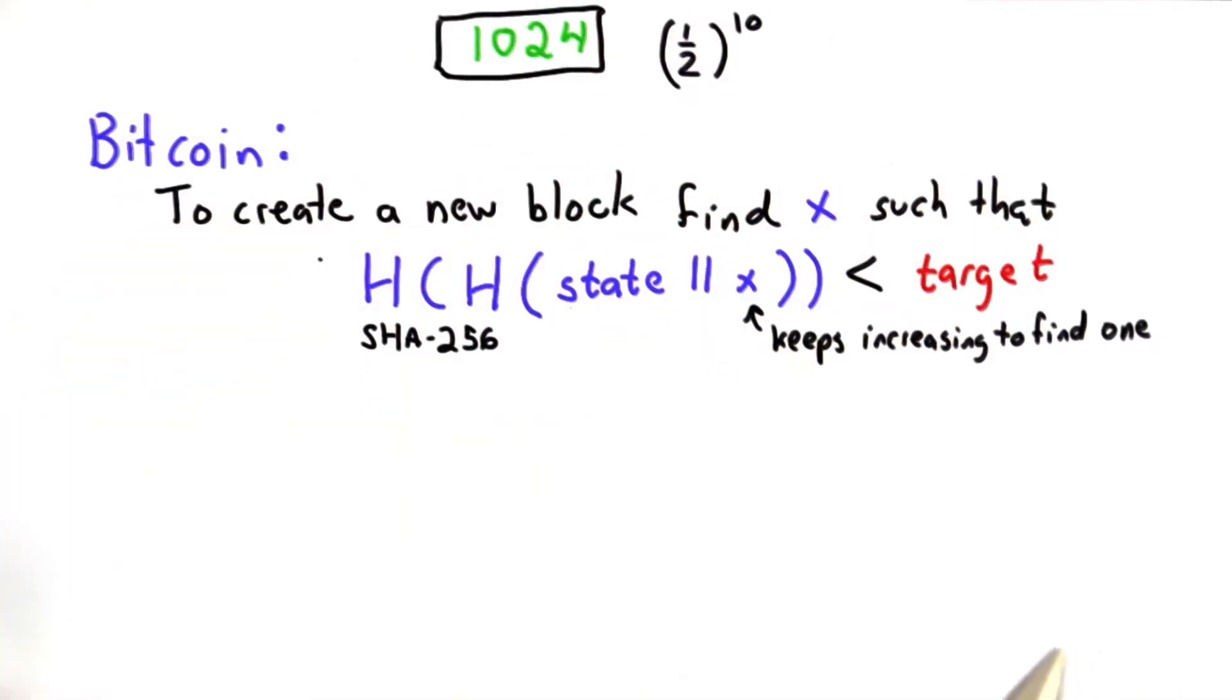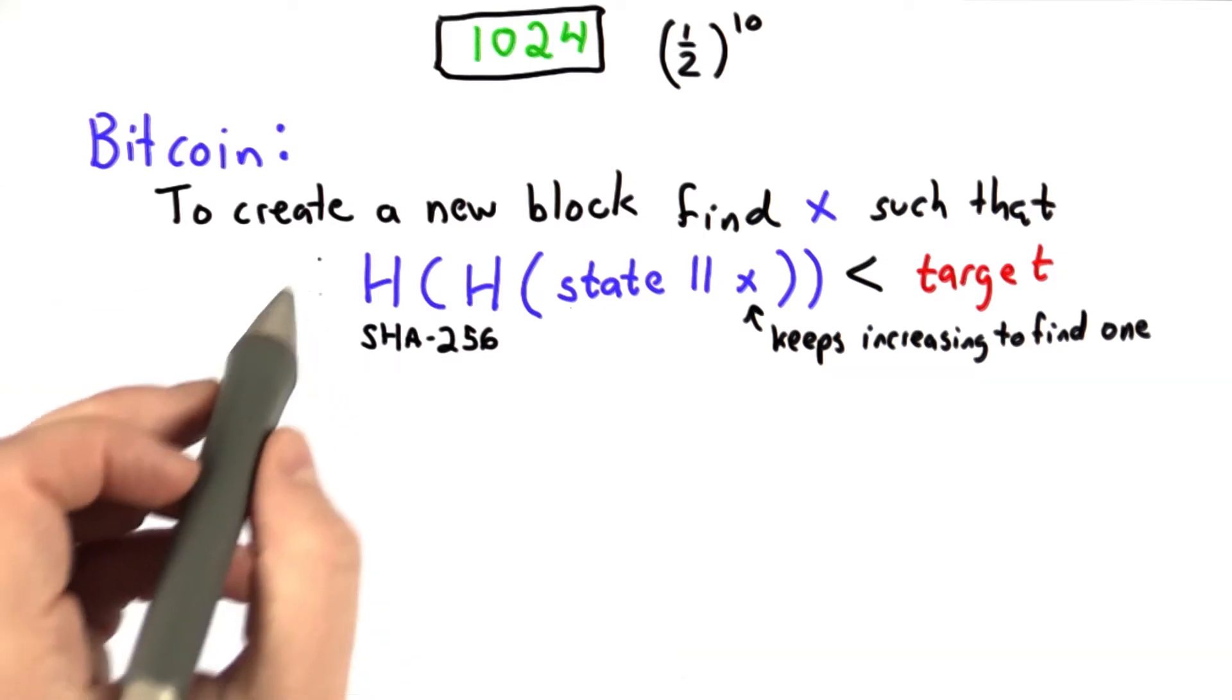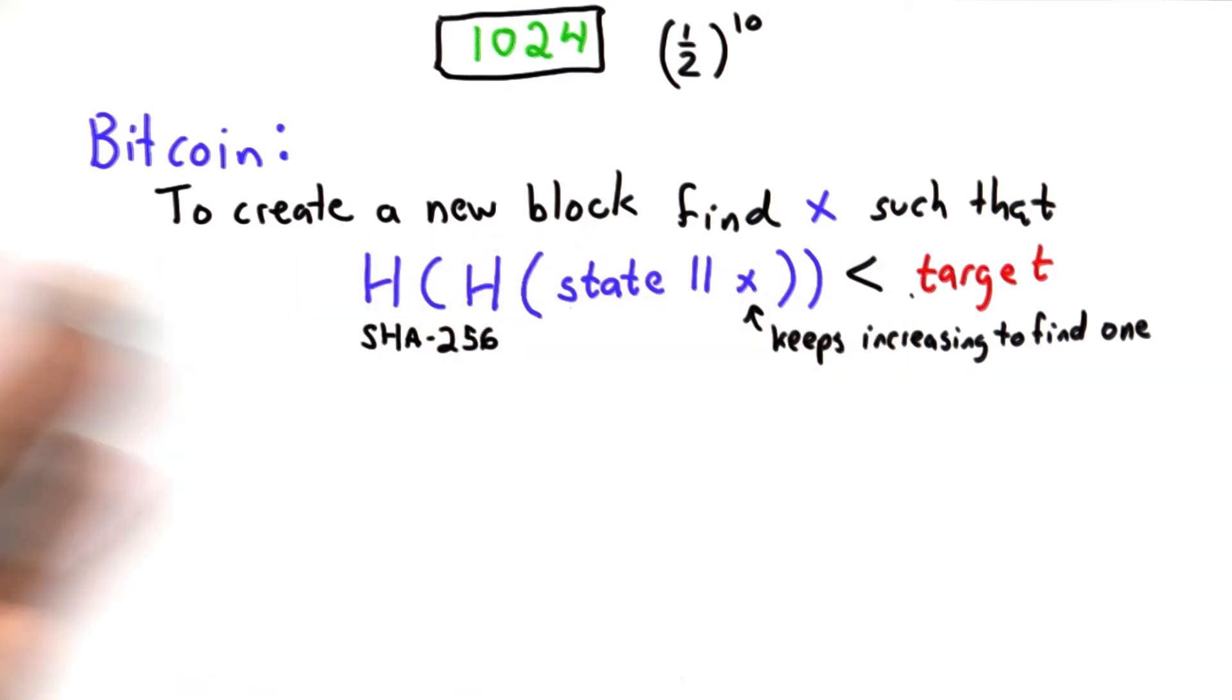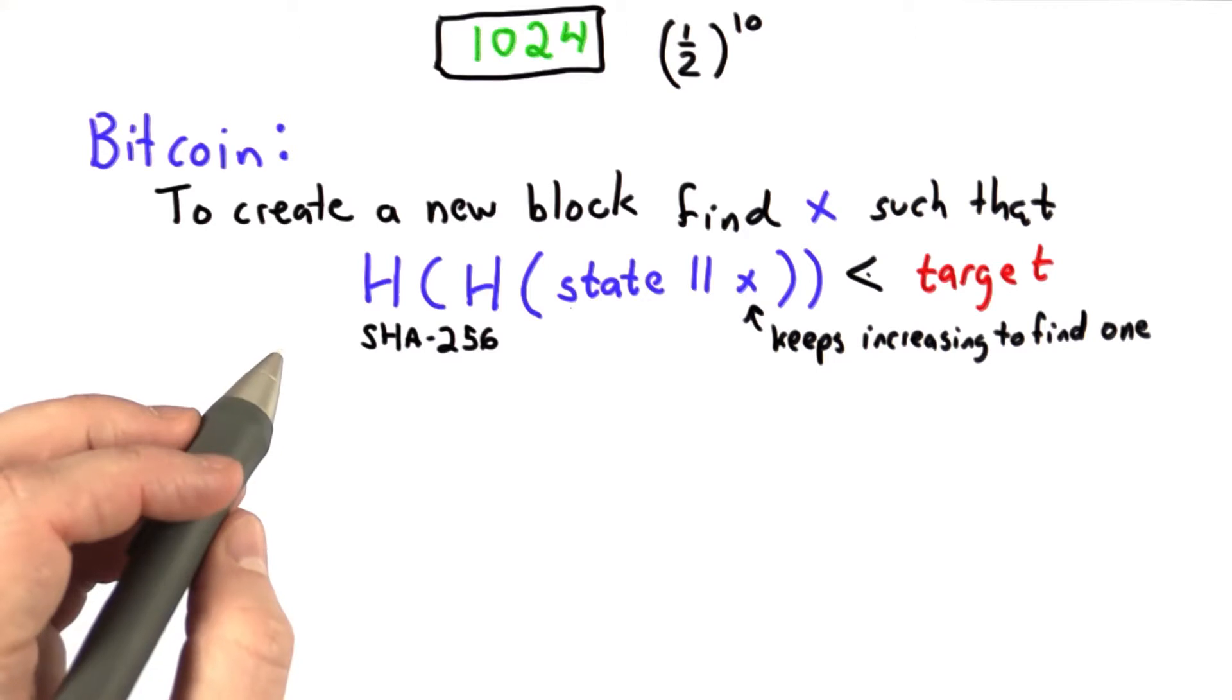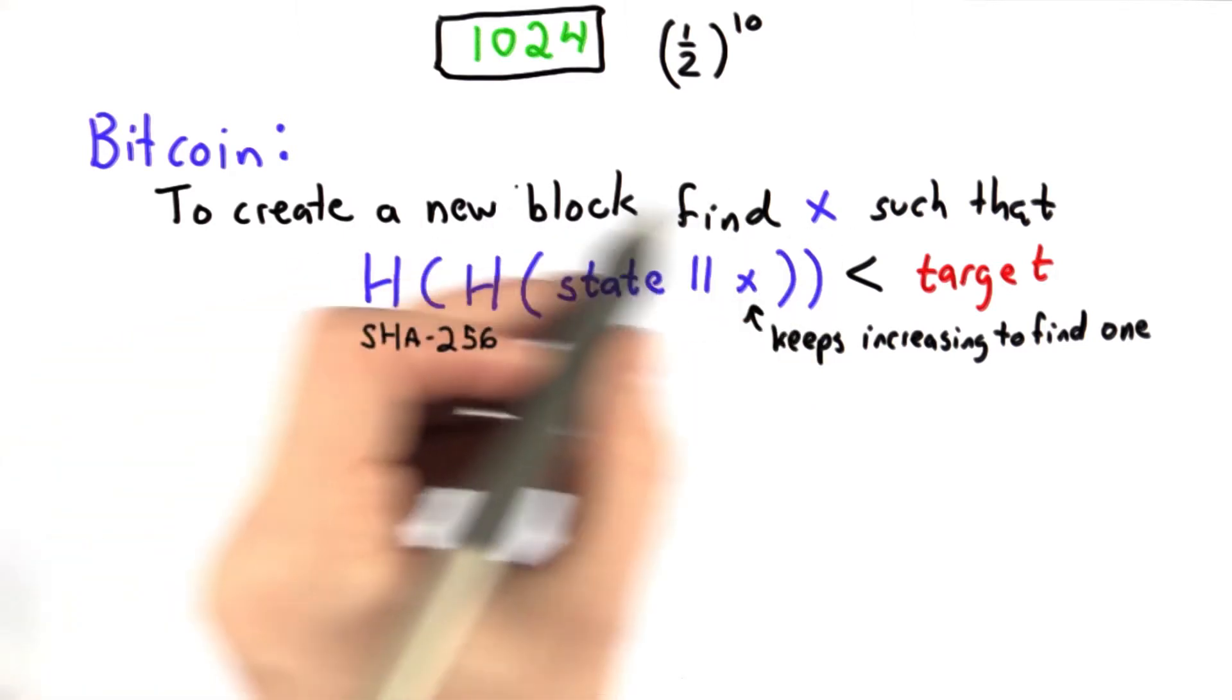This is the idea Bitcoin uses to generate a timestamp - you have to keep finding new blocks. A block will validate a set of transactions, but to generate a new block you've got to find a new timestamp, which is this target.